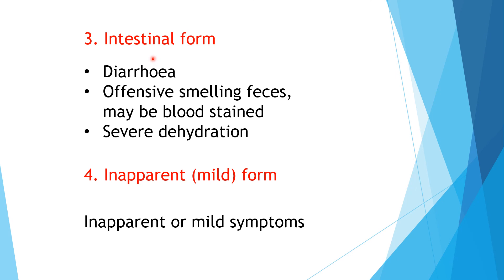The third form is the intestinal form, where diarrhea is the prominent feature. The feces are offensive-smelling, and in severe cases may contain blood. Due to severe diarrhea there is severe dehydration, which the clinician can assess by pinch test. The fourth form is the inapparent or subclinical form, where there may be no symptoms at all, but there is infection in the animal, or it may be a mild form with very mild symptoms.